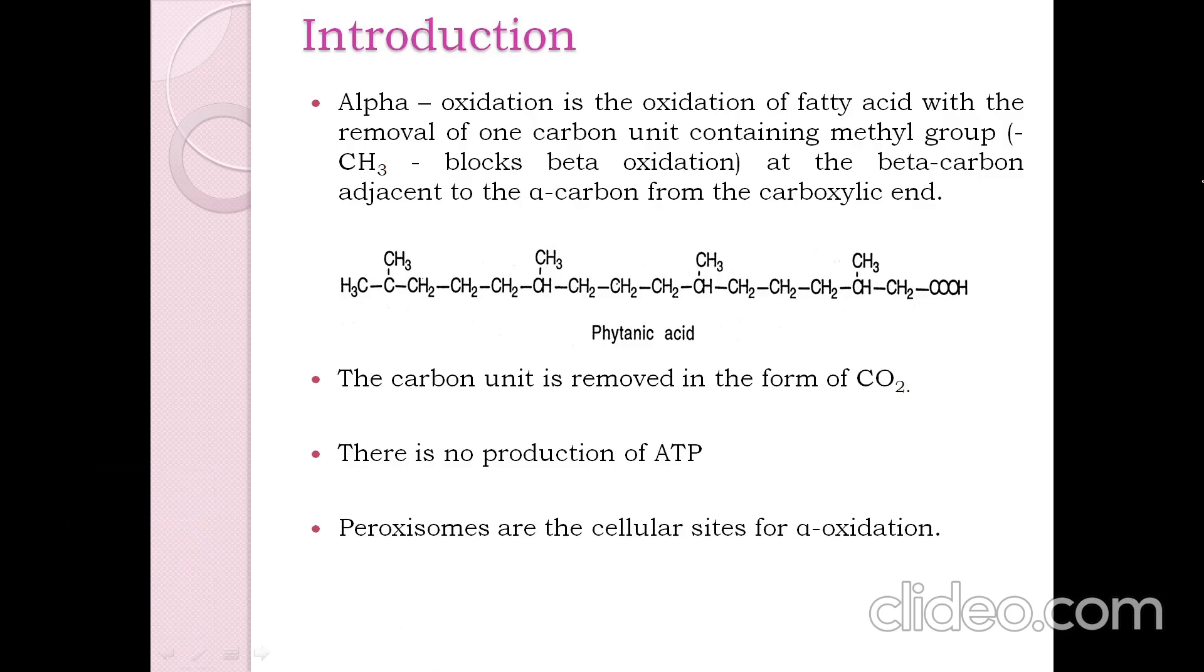Let us take the example of phytanic acid, which is a branched fatty acid molecule. The carbon which is present adjacent to the functional group COOH is the alpha carbon, and the carbon which is present adjacent to this alpha carbon is the beta carbon. As this beta carbon is methylated, this cannot undergo beta oxidation and therefore it enters into alpha oxidation process.